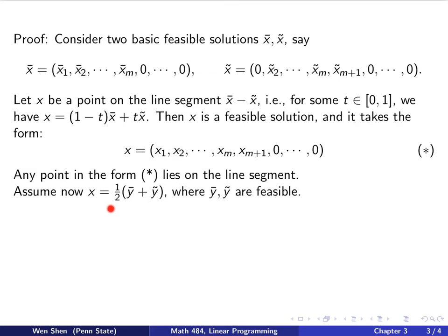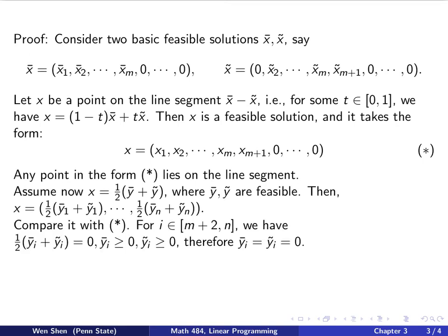Now let's go to the definition of the edge. Now, let's assume that x equals a half y bar plus y tilde, where y bar, y tilde are two feasible solutions. Then I can write out the element of x. It will just be half of y bar plus y tilde with the corresponding index in each element of x. Now let's compare this expression of x with the x that's concluded here in the star.